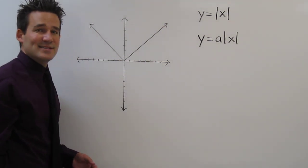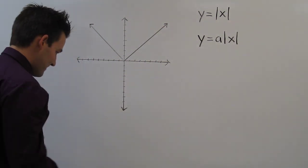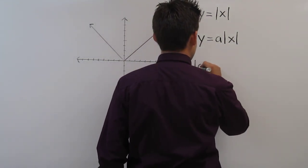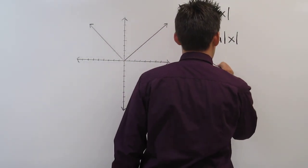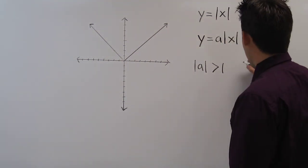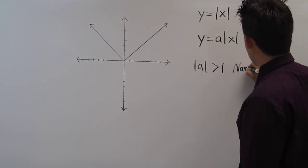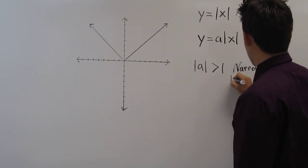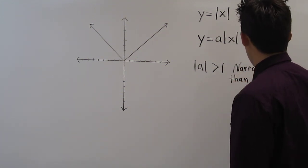This constant a tells us a lot about the graph. If the absolute value of a is greater than 1, then the graph is going to be narrower than the parent function.